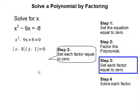Step 3: set each factor equal to 0. We're going to set x minus 8 equals 0, and x minus 1 equals 0.